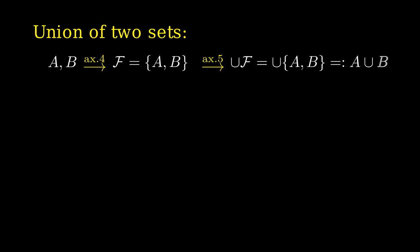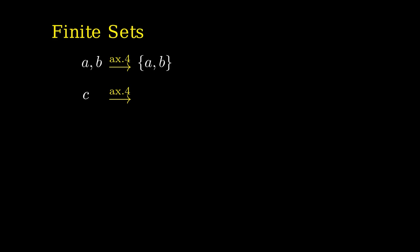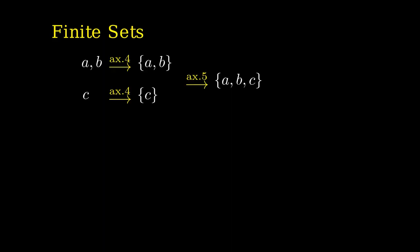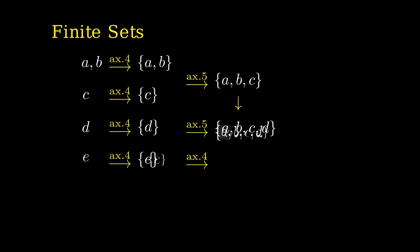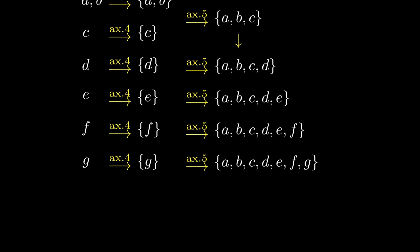With the axioms we have, we can create finite sets. If I have elements A, B, C, I can use axiom 4 to create {A, B}, use axiom 4 to create {C}, use axiom 4 to create a set containing those two sets, then use axiom 5 to get {A, B, C}. I can then add element D similarly, and keep going — adding E, F, and so on using axiom 4 and axiom 5.